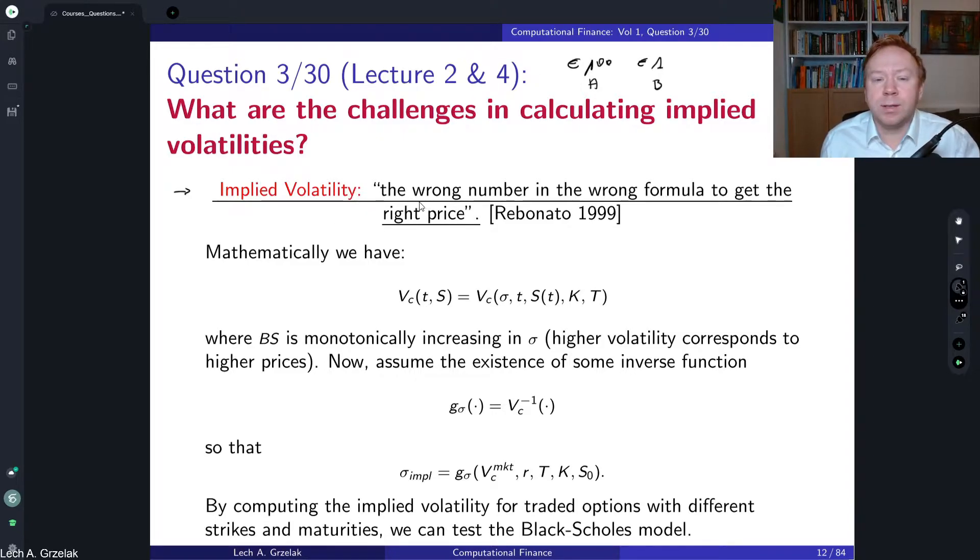Implied volatility is nicely stated by Rebonato already in 1999, where he states that implied volatility is the wrong number in a wrong formula to get the right price. The wrong formula means that essentially we use Black-Scholes model, and of course Black-Scholes model is not the market. Black-Scholes is our assumption of how stock could behave, but it's not reality. It is some mathematical model, and we use a wrong number because we don't know what is the sigma. We want to find this sigma such that the wrong formula would give us right price. We want to invert Black-Scholes formula to get implied volatility such that the prices from the model and the market are the same.